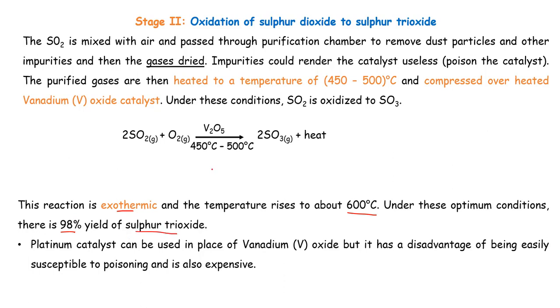However, in case we don't have vanadium 5, we can use platinum. It's also a good catalyst. The only downside of it is that it can easily be poisoned due to impurities as well as it being quite expensive. As such, we normally stick to our vanadium 5 oxide.